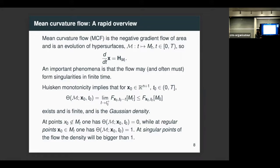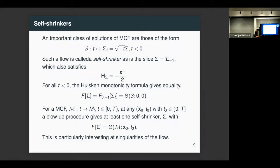An important class of solutions are those that move by symmetry — the so-called self-shrinkers. These are flows that exist for all negative time, where a fixed surface Σ moves purely by dilation. For a surface to be a self-shrinker, it must satisfy a prescribed mean curvature equation: the mean curvature vector equals minus one-half of the normal component of the position vector.